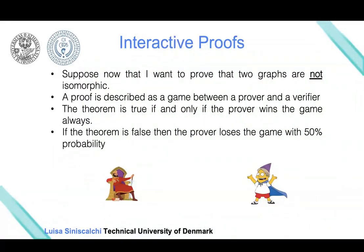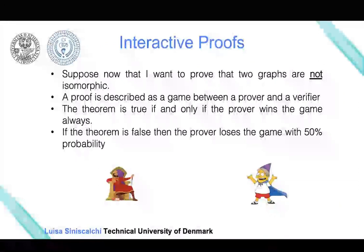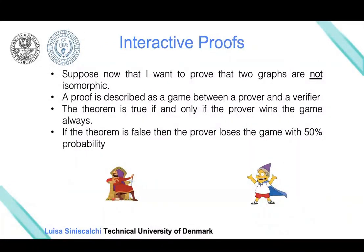There exists a second property that prevents the verifier from being framed by the prover. If the prover is malicious and the two graphs are actually isomorphic, but the prover wants to prove otherwise, we say that in this interactive proof the prover will succeed in this malicious intent with at most probability one-half. These interactive proofs were defined for the first time by Goldwasser, Micali, and Rackoff.